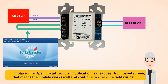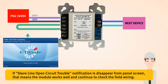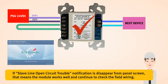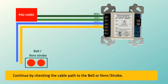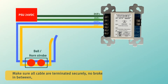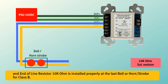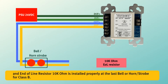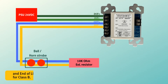If the slave line open circuit trouble notification disappears from the panel screen, that means the module works well — continue to check the field wiring. Check the cable path to the bell or horn strobe. Make sure all cables are terminated securely, with no broken or open cable in between. An end of line resistor of 10k ohm must be installed properly at the last bell or horn strobe for Class B.